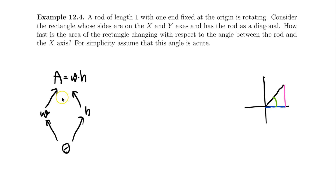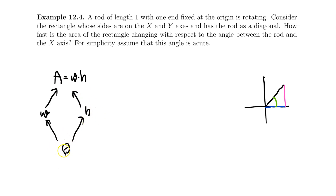To find how fast the area changes with respect to the angle, I can find how fast the area changes with respect to the width, and how fast the width changes with respect to theta, then combine them. Similarly, I find how fast the area changes with respect to the height, how fast the height changes with respect to theta, and combine those.